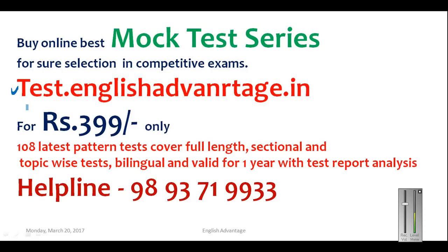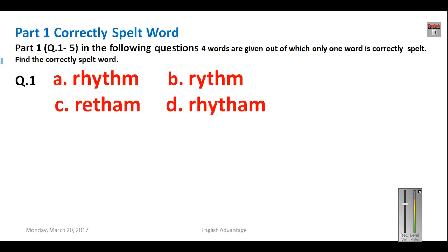Question number one: what is the correct spelling of 'rhythm'? Please take a piece of paper and pen and start solving these questions as I go along. If your answer matches my answer, give yourself one mark; otherwise apply 0.25 minus marking. When the video is over, send me your final score through the comment box. The answer is A — the correct spelling is R-H-Y-T-H-M.